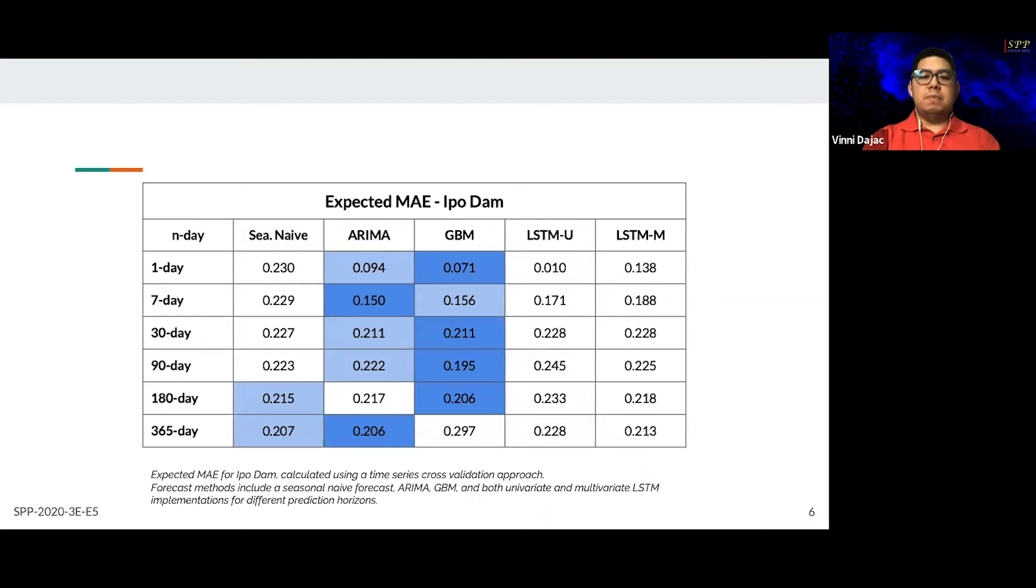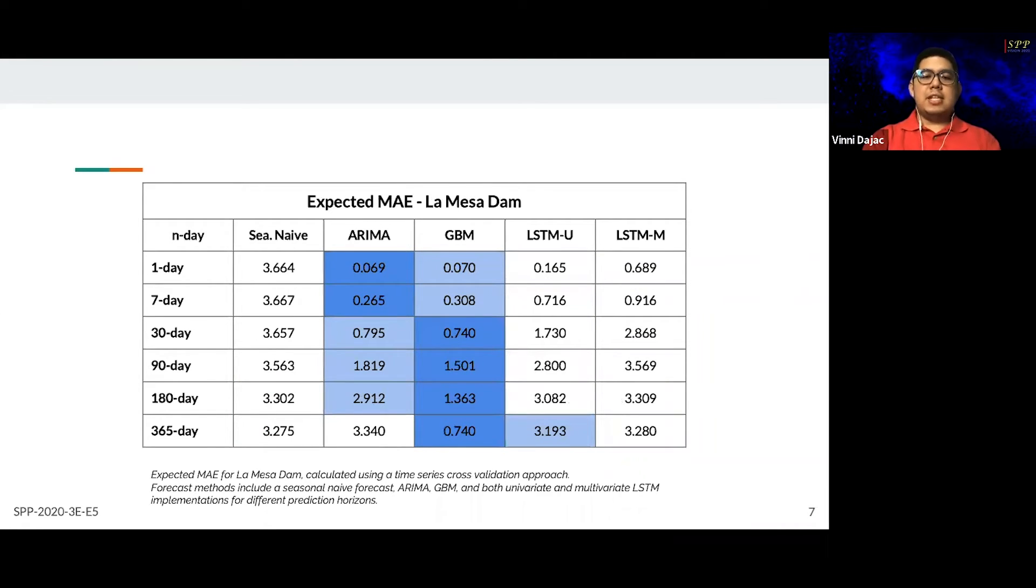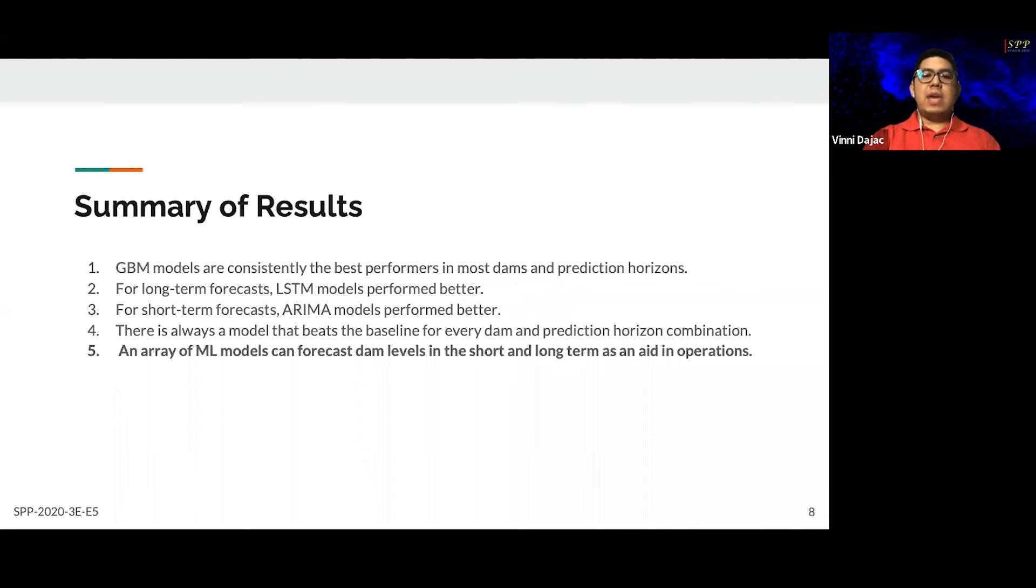Here are the results for Ipo Dam and La Mesa Dam. We see that in both dams, ARIMA and GBM both perform consistently well. In addition, LSTM again does well for long-term. In summary, GBM is a top performer overall. LSTM does well for long-term while ARIMA does well for short-term. For each dam and prediction horizon combination, an ML model beats the baseline. Finally, ML models can be used to aid short-term interventions and long-term planning. Thank you.